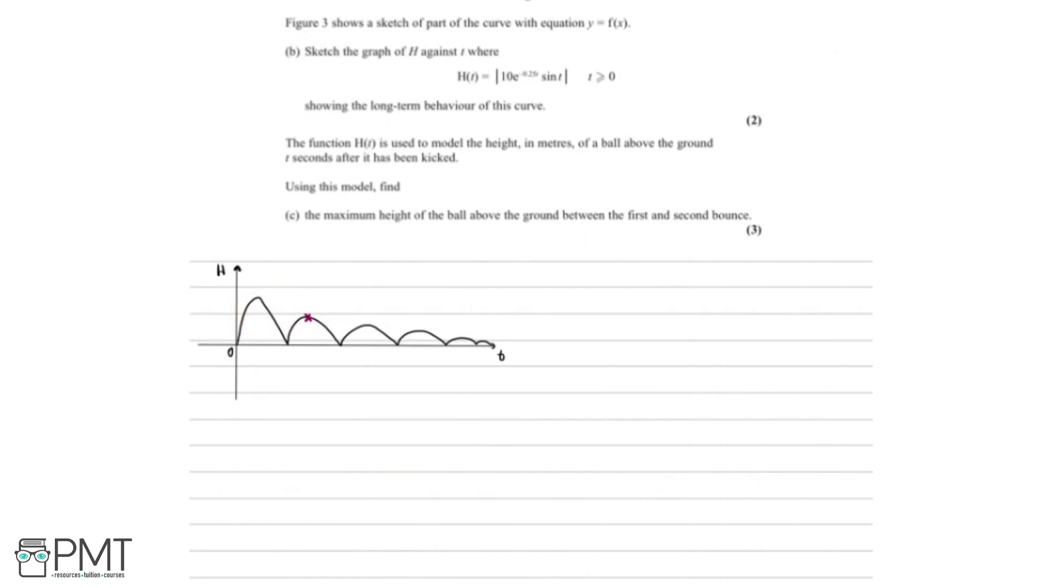And this is because here the ball's been kicked. And then it starts to fall and here it has its first bounce. So this is the point in between the first and second bounce. And here's the second bounce. So we need to identify this point. What was great is that in part a we found out that the turning points satisfy the equation tan x equals 4. So we can use that here.